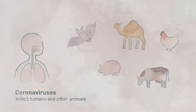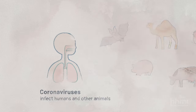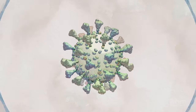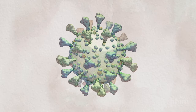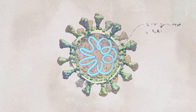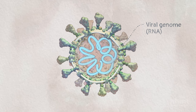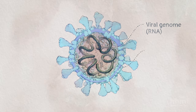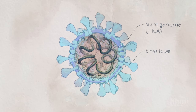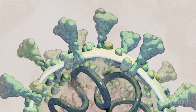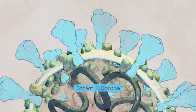Coronaviruses infect humans and other animals. In humans, they cause the common cold and in some cases more serious respiratory diseases. All coronaviruses, including SARS-CoV-2, have a genome made of a single strand of RNA, which is surrounded by a membrane made of lipids and proteins. This membrane is called an envelope. Coronaviruses are named after what looks like a crown of protein spikes that stick out of their envelope.